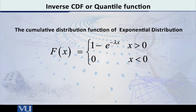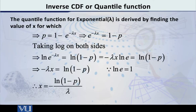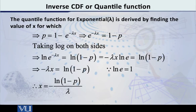Now, if we want to invert this particular CDF, how do we do it? Instead of writing F(x), if we call this p, then we have p = 1 − e^(−λx). We want to solve this equation for x. We rearrange terms and get e^(−λx) = 1 − p.